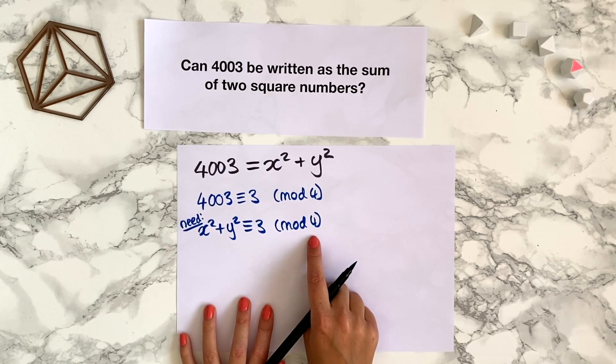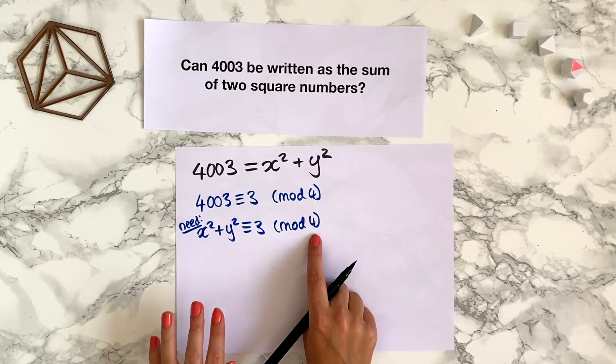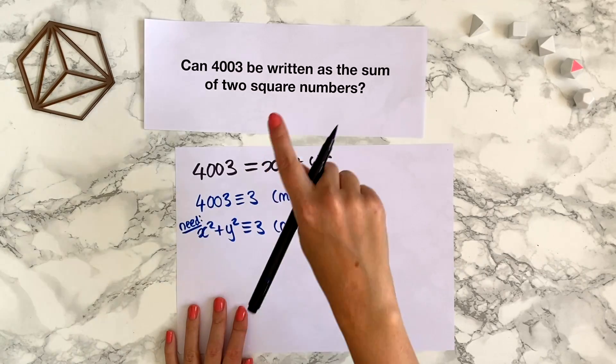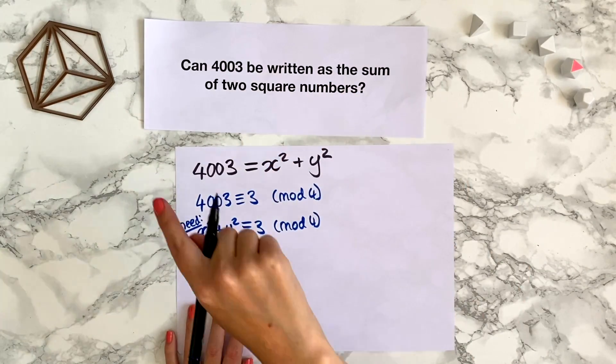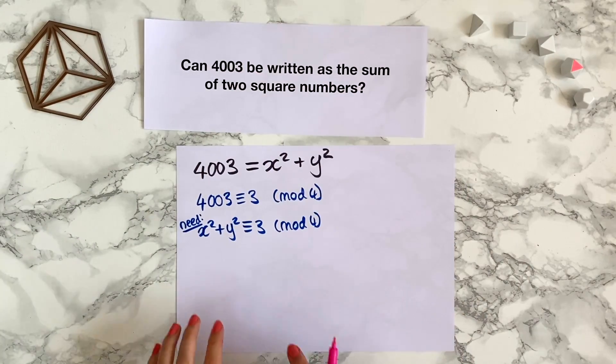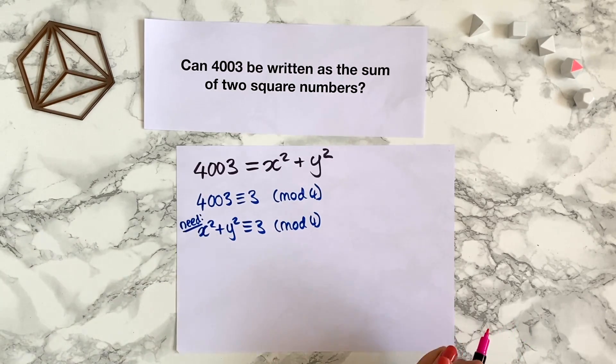Now in modulo 4, numbers can be congruent to either 0, 1, 2, or 3. They've got four options of where they can be on the clock. So modulo 4, x and y are each one of 0, 1, 2, or 3.